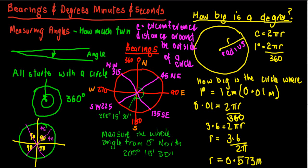Basically what we're talking about is measuring angles, or how much turn there is. If we have an angle, how much turn is there from there to there? We use degrees, minutes, and seconds.